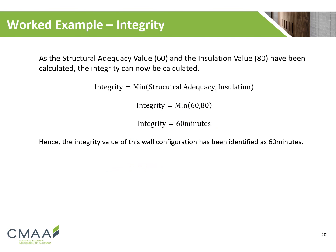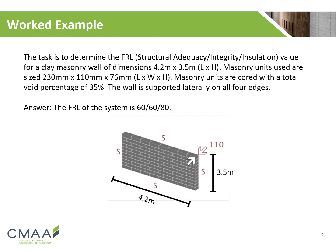Determining the integrity value is now a simple task as we know the structural adequacy and insulation values. Selecting the minimum of the two, we determine our wall integrity value to be 60 minutes. With that, we've now evaluated the FRL design for our masonry wall. It would be presented as a 60-60-80 wall when labelled using NCC terminologies.